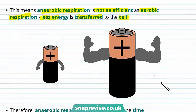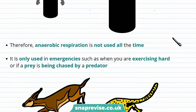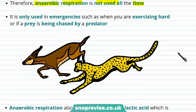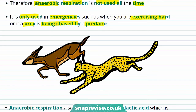As it's not very efficient, anaerobic respiration is not used all the time — we normally use aerobic respiration. Anaerobic respiration is only used in emergencies, such as when you're exercising hard or if a prey is chased by a predator. This is because the muscles are working really hard and don't get enough oxygen for aerobic respiration.